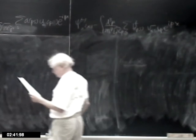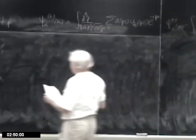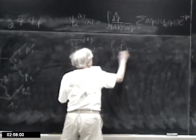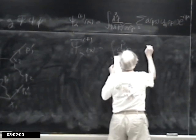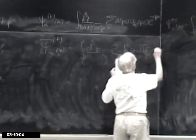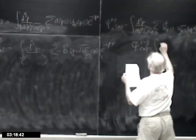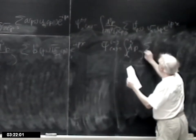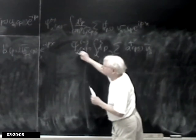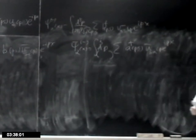Writing it out more carefully: ψ̄^+ involves b(p,s) and v̄_α(p,s) e^{-ipx}, and ψ̄^-(x) involves b†(p,s) v̄_α(p,s) e^{+ipx}. Those are our field expansions.